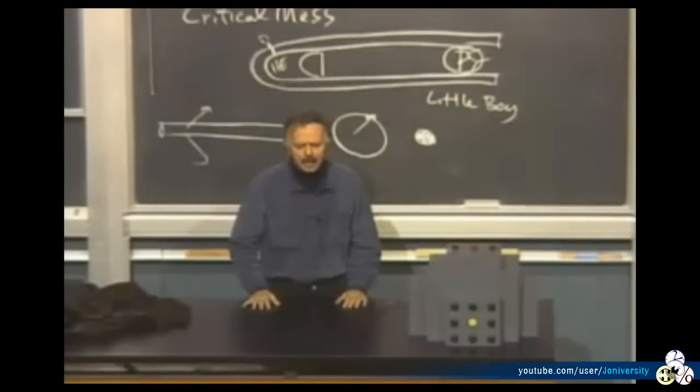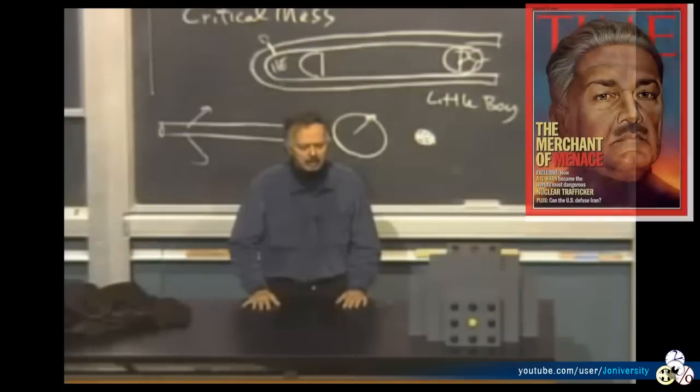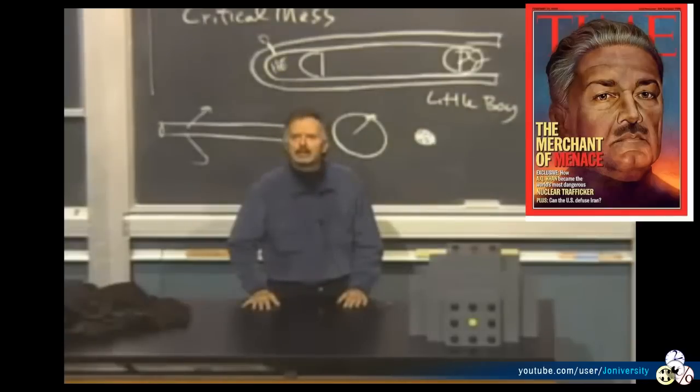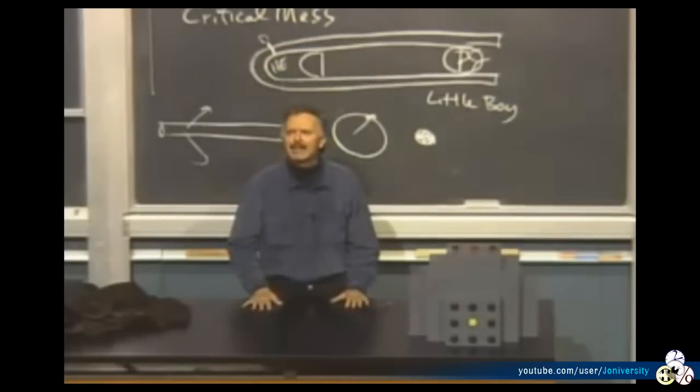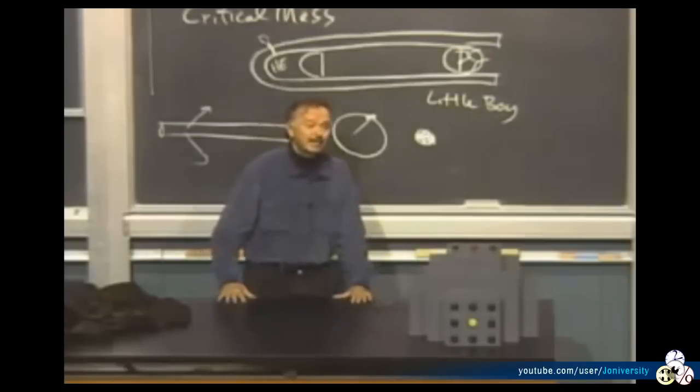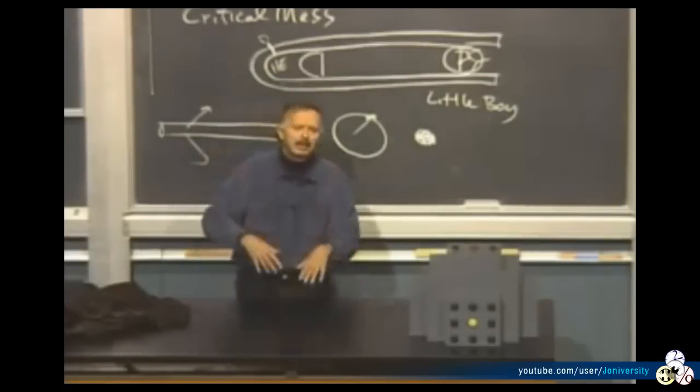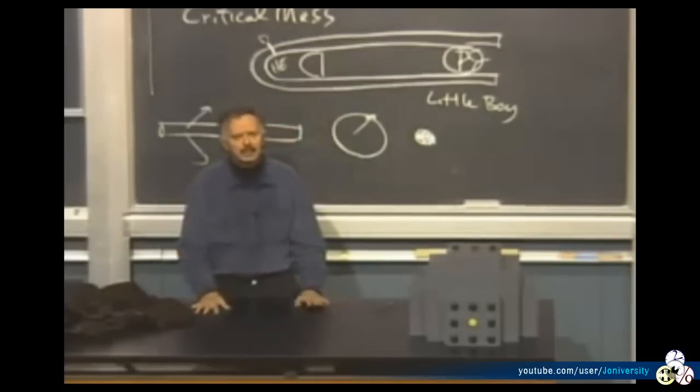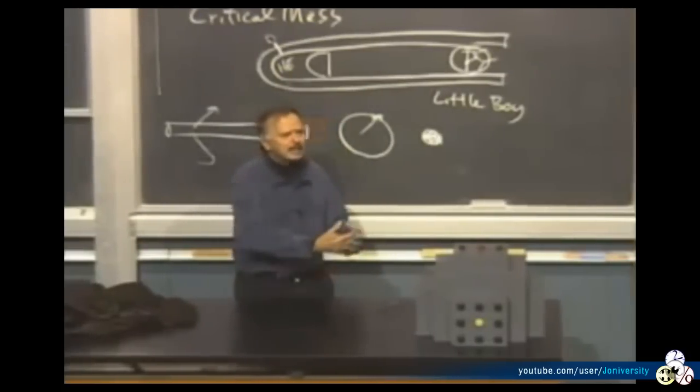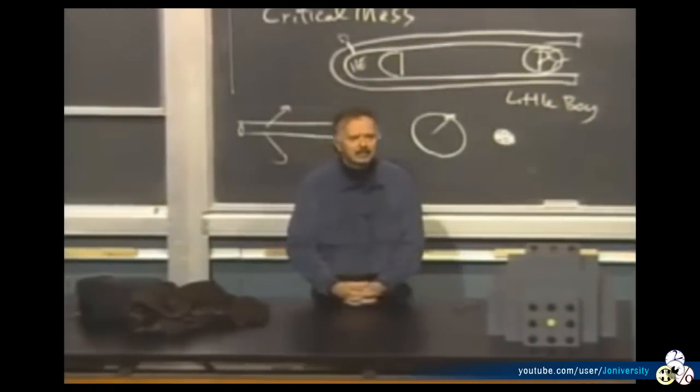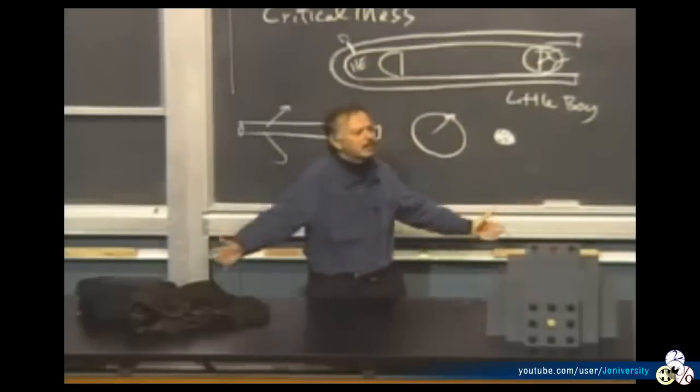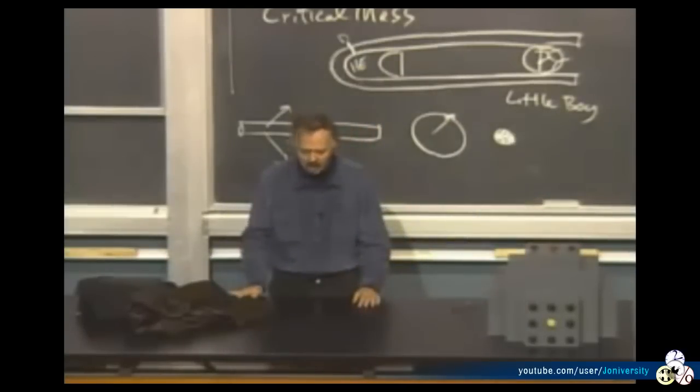There was a Pakistani scientist, A.Q. Khan, who had the designs for this. He sold them to Libya and to North Korea, and has gotten a great degree of infamy for having done this. We found out about it because Libya decided maybe it makes more sense, now that the Soviet Union is not around, to be friends with the U.S. instead of enemies. So they decided they would stop trying to make an atomic bomb. We'll open up, show you everything we have. We go in there and say, oh, these are interesting designs.